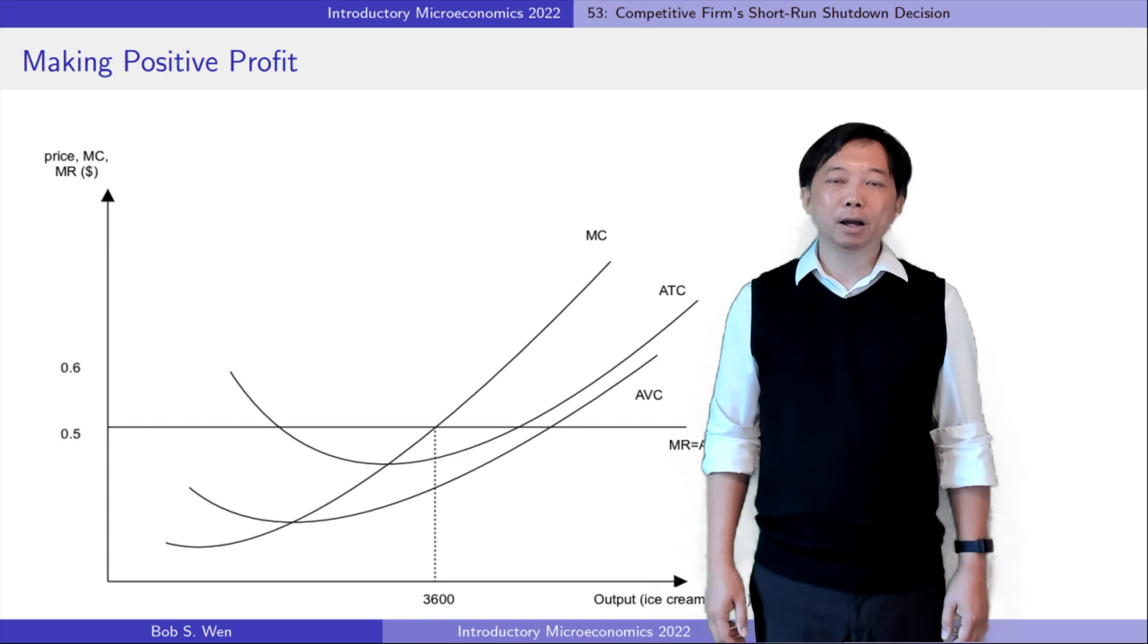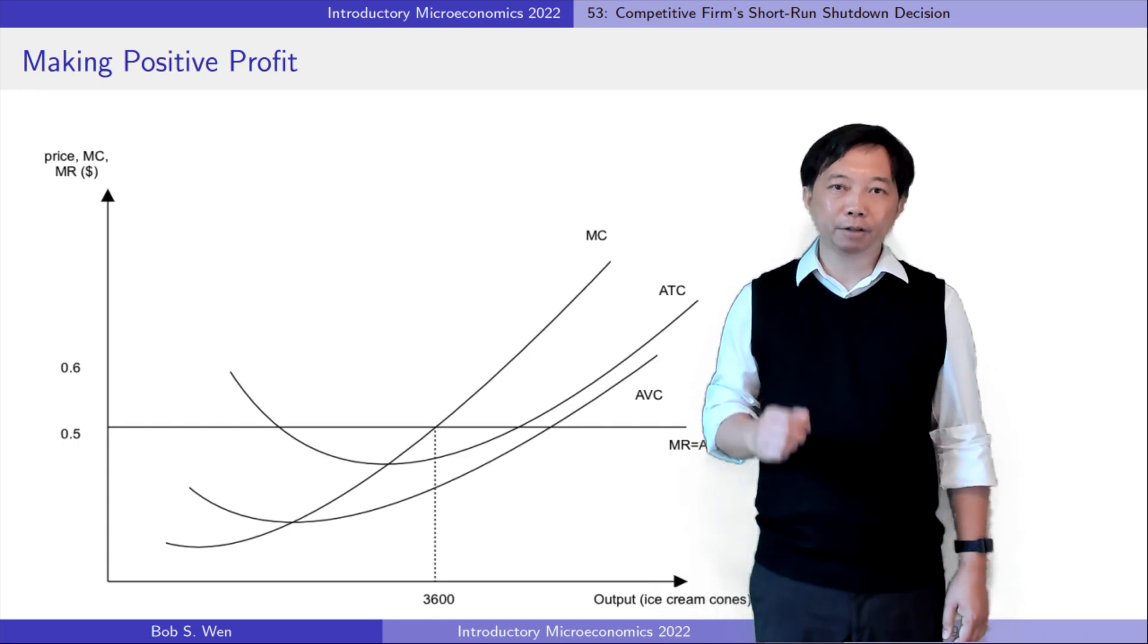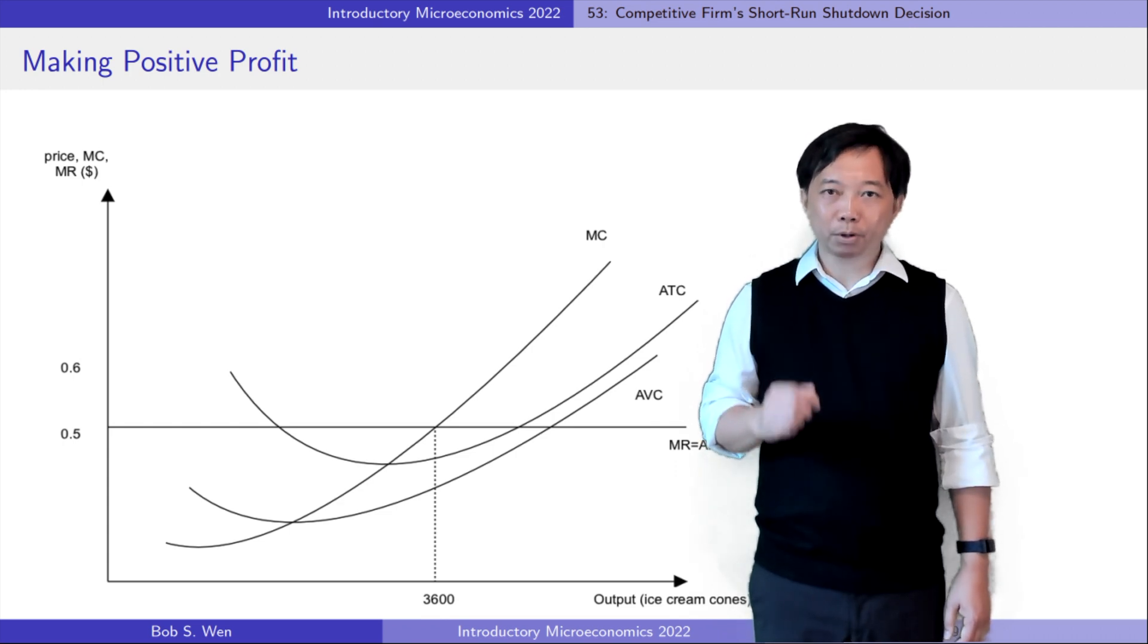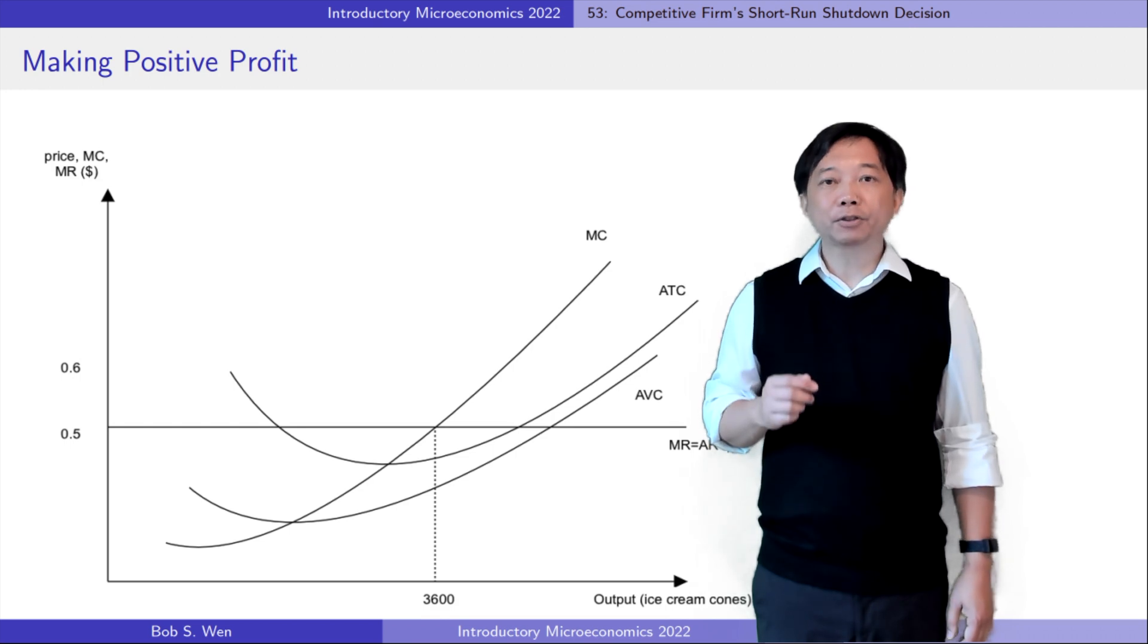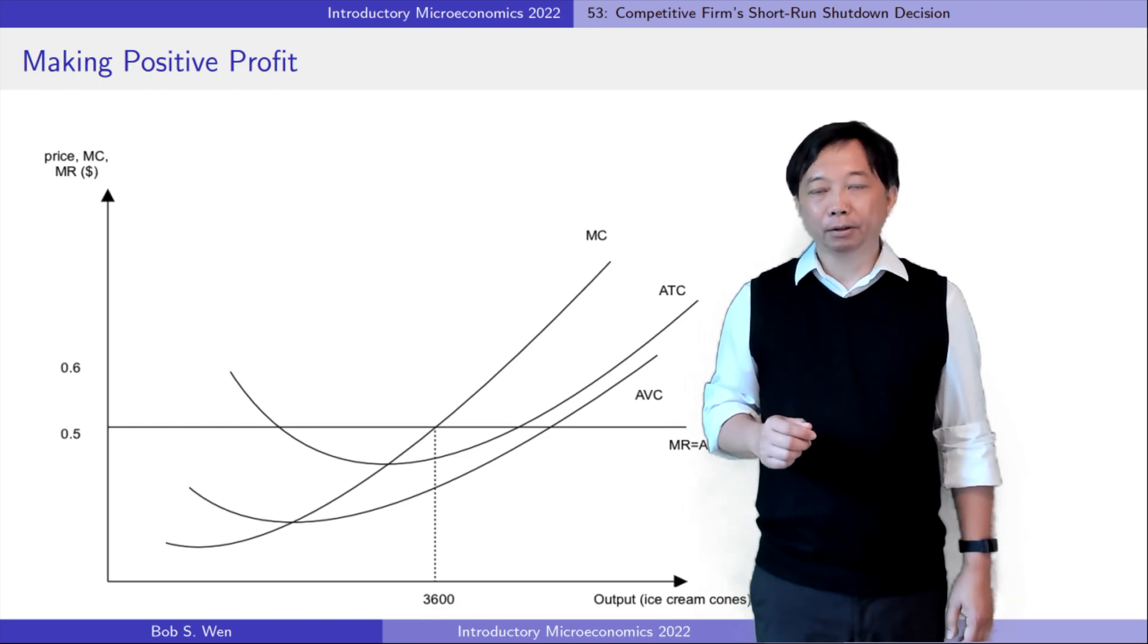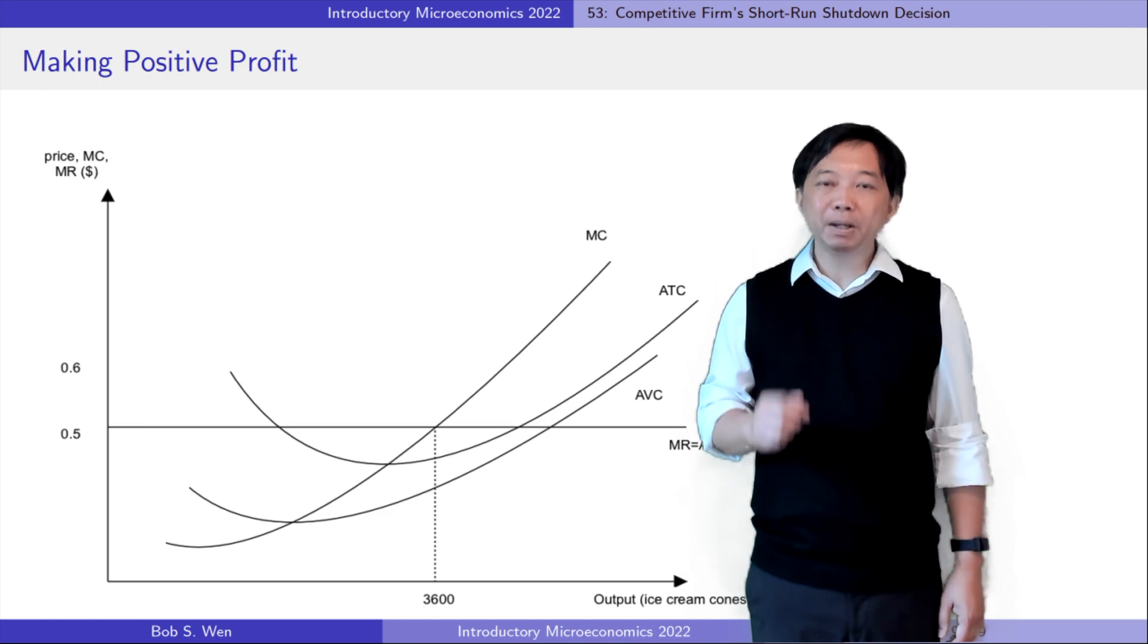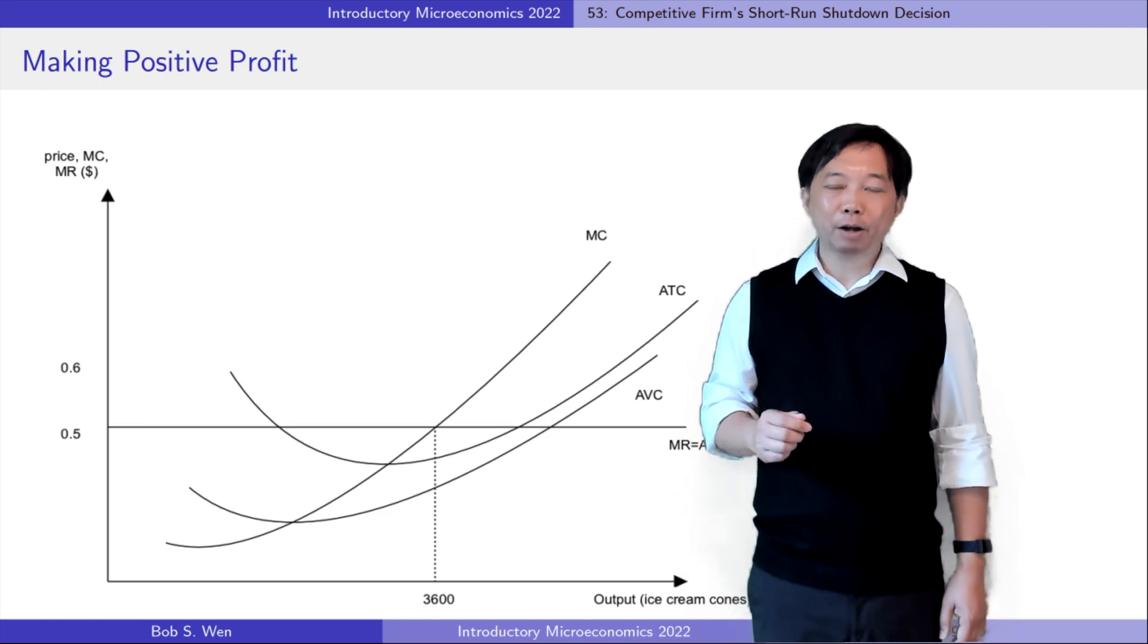So, in summary, a perfectly competitive firm operates when the market price is greater than its average variable cost. It shuts down in the short run only if the market price is less than the minimum average variable cost.